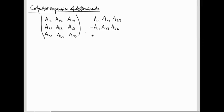And then A12, A21, A33. Does that come with a plus or a minus? That corresponds to the permutation 2, 1, 3, which is just obtained by switching 1 and 2. So actually that comes with a minus sign.